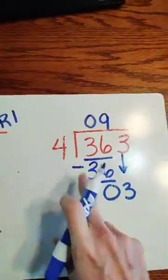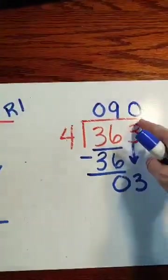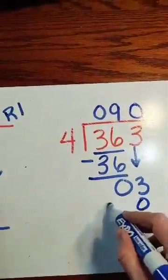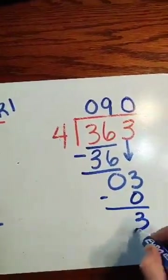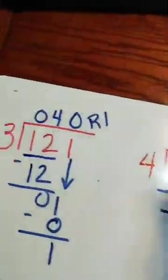Does 4 go into 3? No, it doesn't. So I put my 0 above that because that's that last number I'm using right now. 4 times 0? 0. I subtract. I subtract a remainder of 3. So let's just check this problem.